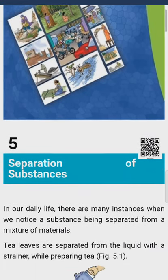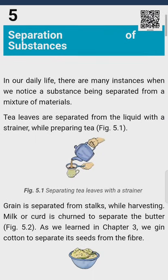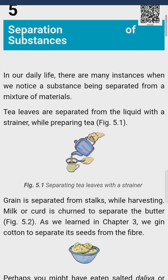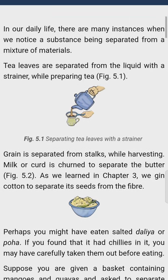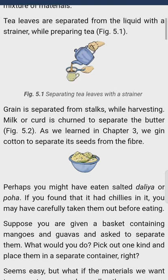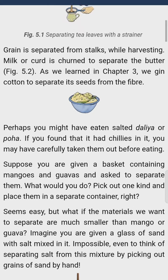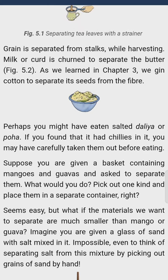In our daily life, there are many instances when we notice a substance being separated from a mixture of materials. Tea leaves are separated from the liquid with a strainer while preparing tea. Grain is separated from stalks while harvesting. Milk or curd is churned to separate the butter. As we learned in chapter 3, we gin cotton to separate its seeds from the fibers.